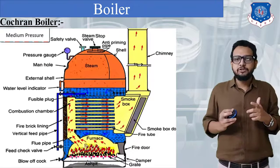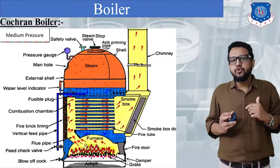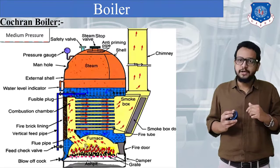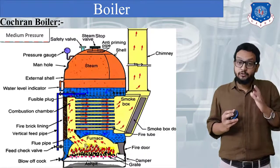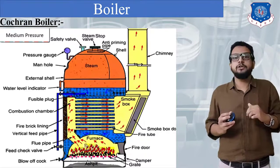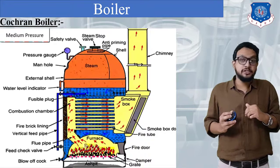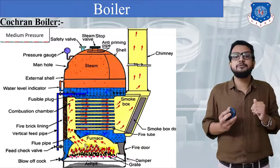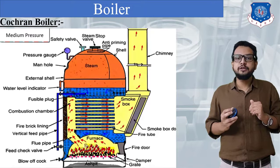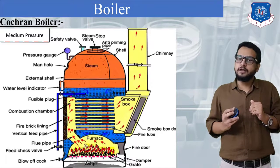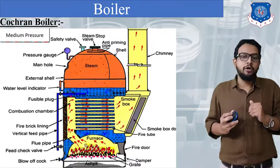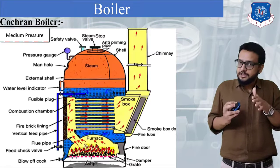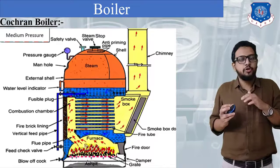Next you can mention natural circulation. So over here we would say natural circulation of hot gases will take place. The operating pressure of this boiler is 6.5 bar but maximum working pressure is 15 bar, which means this comes under the category of a medium pressure boiler. So these are all the characteristics of this boiler.